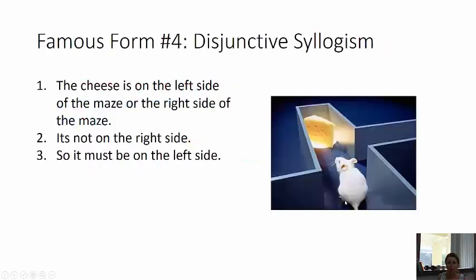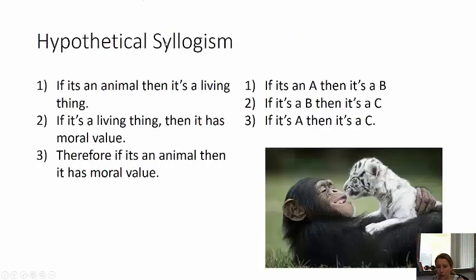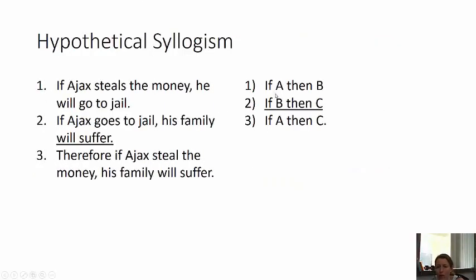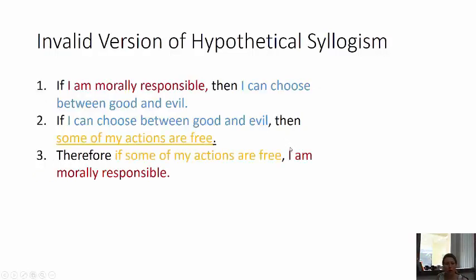There's no name for the invalid form of hypothetical syllogism because it's so straightforward it's hard to trick people. But in general, if you get the pieces out of order — for example if A then B, B then C, but then you say C then A, or you reverse these so it's C then B and then say A then C — if you get some of these backwards then it would be an invalid form.